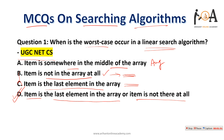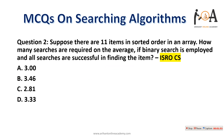Question two: suppose there are 11 items in sorted order in an array. How many searches are required on average if binary search is applied and all searches are successful in finding the item?